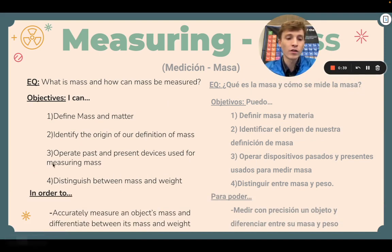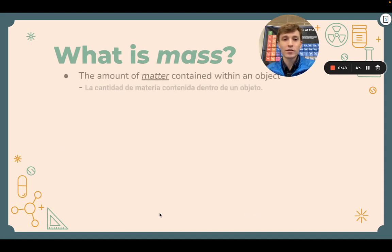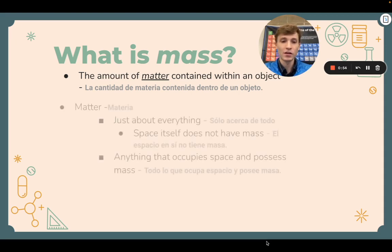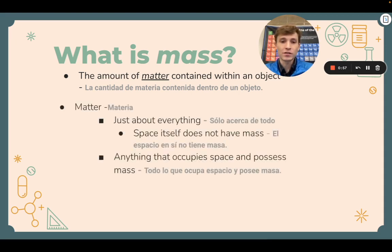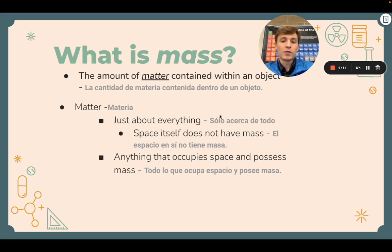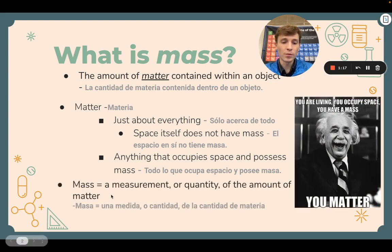We're doing all of this in order to accurately measure an object's mass and differentiate between its mass and weight. So what is mass? Mass is defined as the amount of matter contained within an object — how much stuff is in an object — because matter is just about everything. Anything that occupies space and possesses mass has matter. One thing that does not have mass is space itself, so the space around us does not have mass. Ultimately, mass is a measurement or a way to quantify the amount of matter.